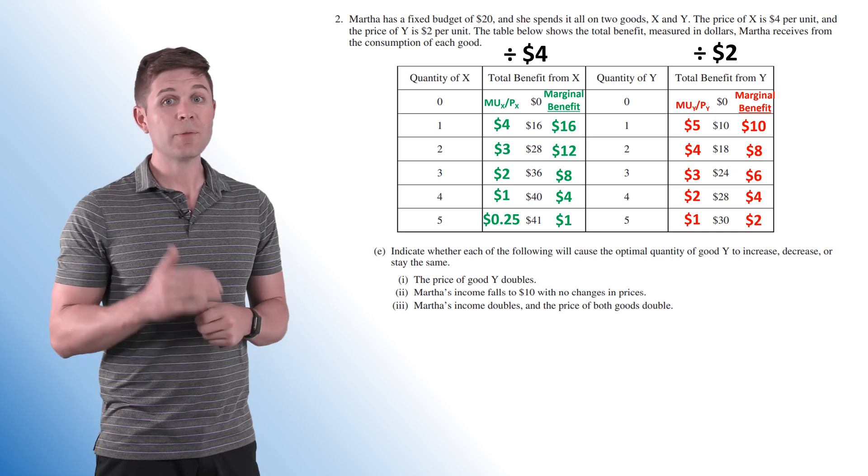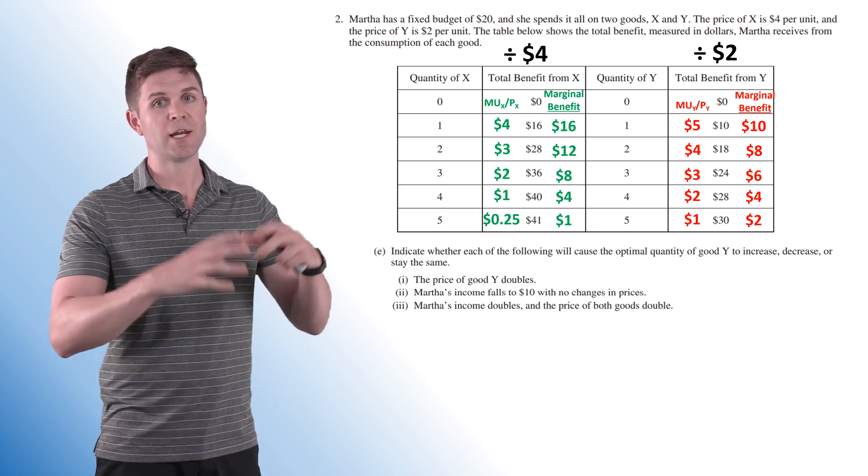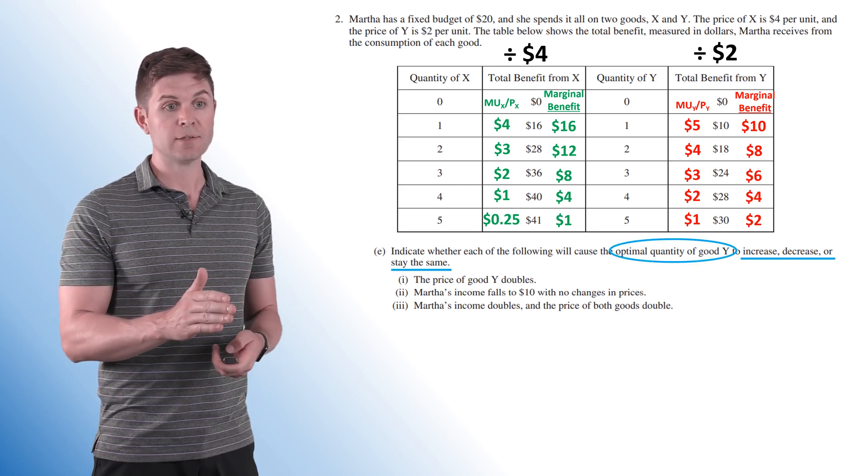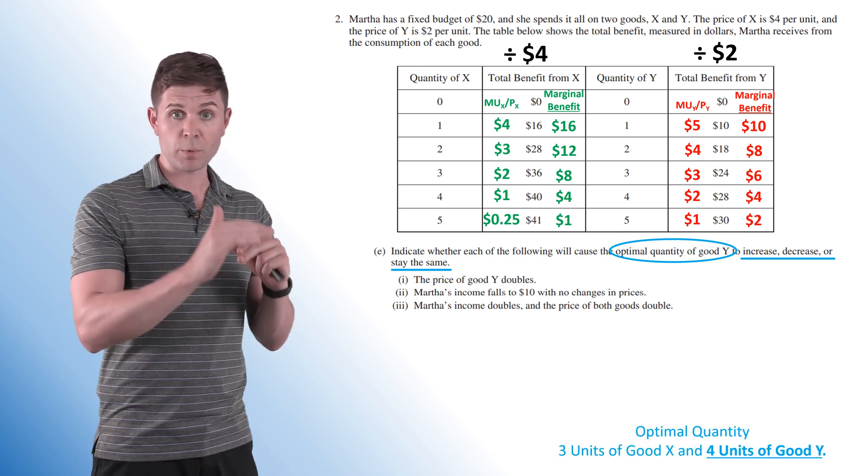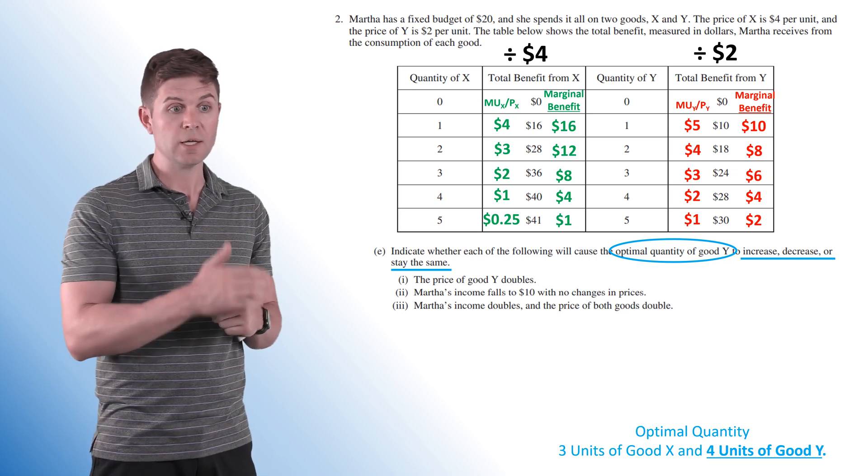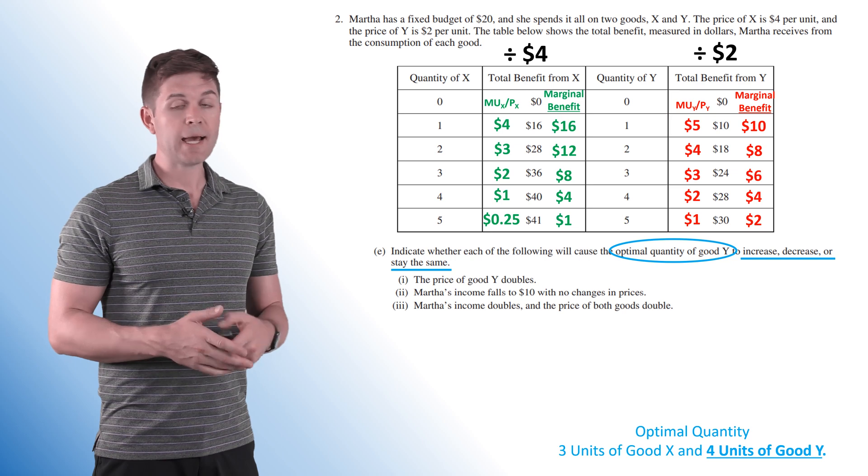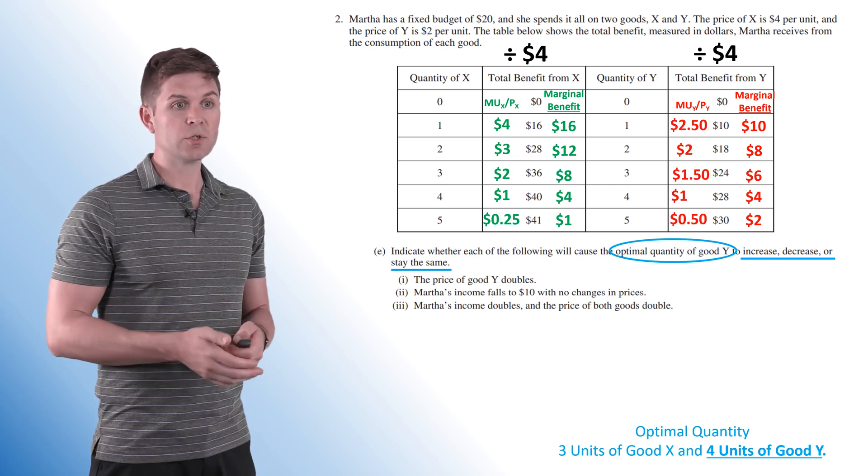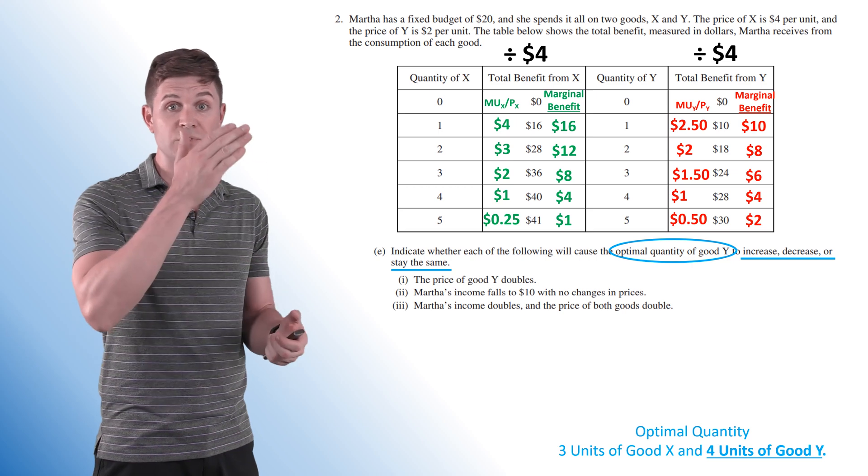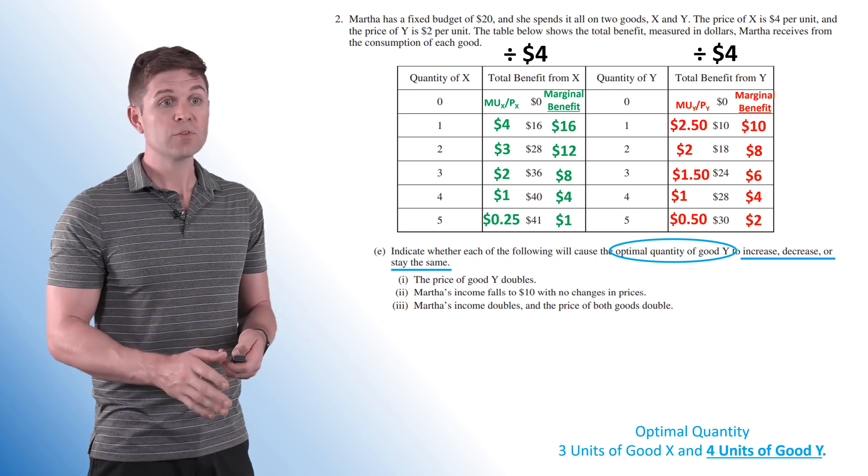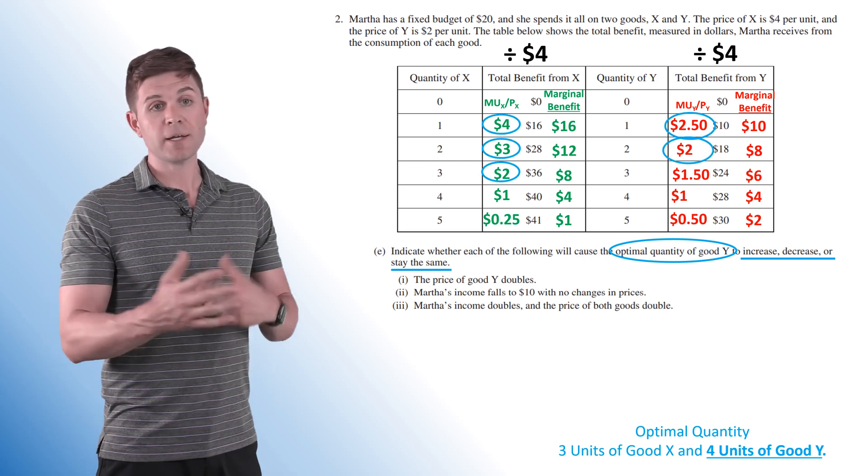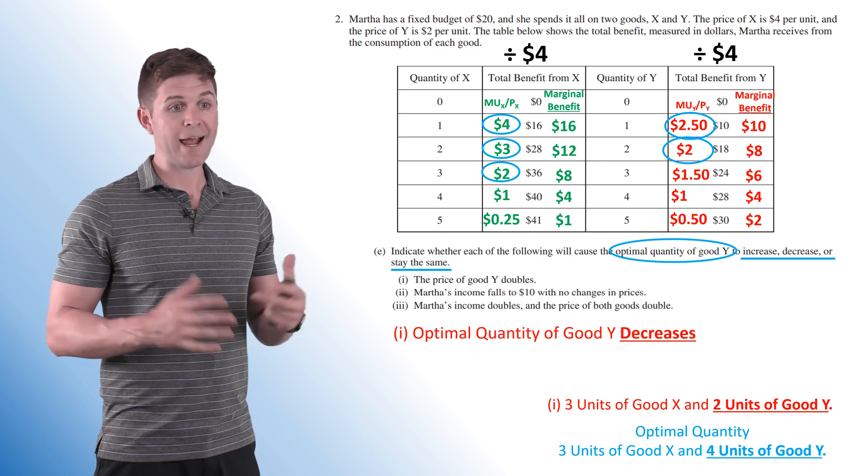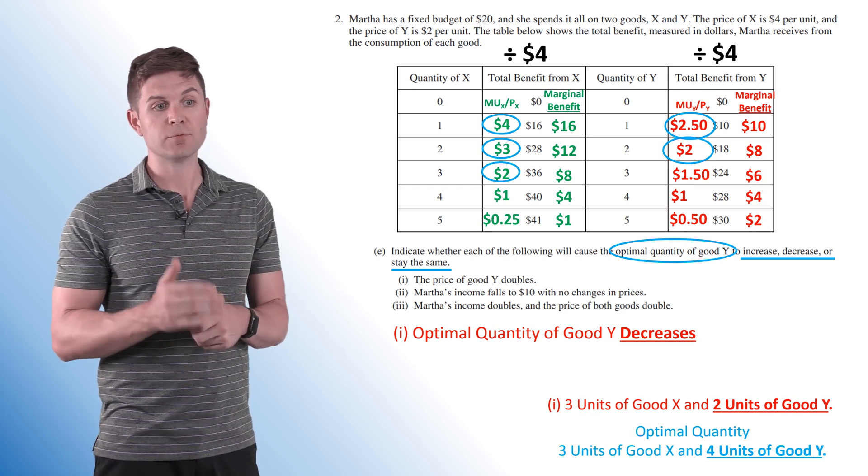Let's move on to E. Now in this one, we're running through three different scenarios, each one changing the outcome slightly. And it's asking us what's going to happen to the optimal quantity of good Y. Is it going to increase, decrease, or stay the same? So we're going to throw what we originally had down here back from part D: three units of good X, four units of good Y, and kind of go through each scenario. The price of good Y doubles. All right, so let's change our price on good Y, and we're also going to change our marginal utility per dollar spent. In this case, we just cut our marginal utility per dollar spent in half. So we are obviously going to be buying less of Y in this situation, but if we spend our $20, this is the way it ends up. Three units of good X, two units of good Y. Okay, so answer here for part I, optimal quantity of good Y decreases.